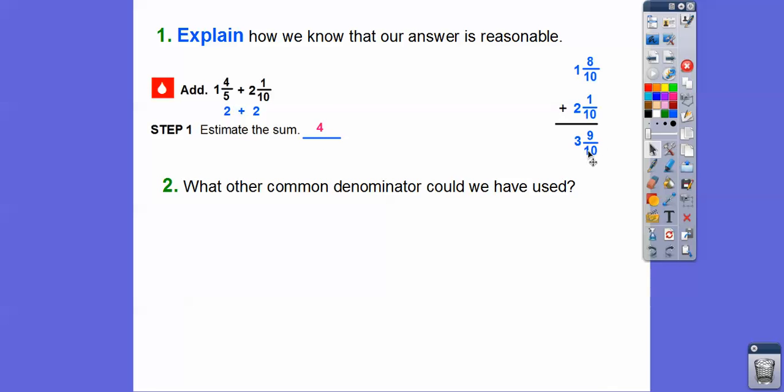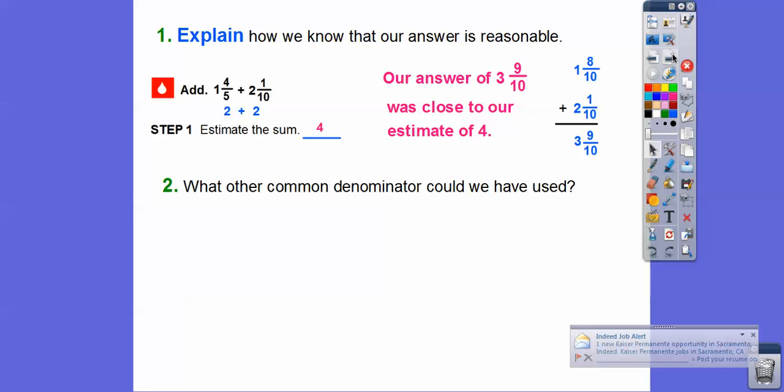And our actual answer was 3 and 9 tenths. Well, 3 and 9 tenths is almost 4 right there. So our answer was close to our estimate of 4. So we know it's going to be a reasonable answer. So what other common denominators could we have used? Well, with 5 and 10, any multiple of 10.